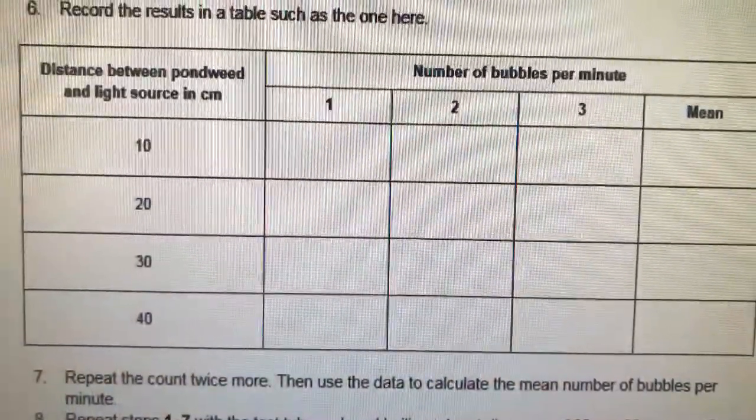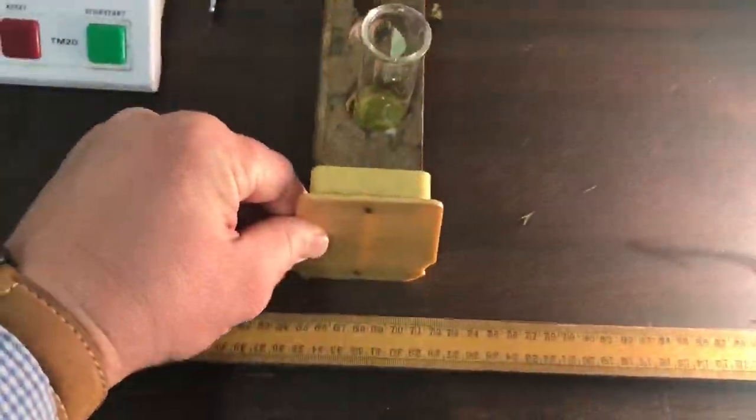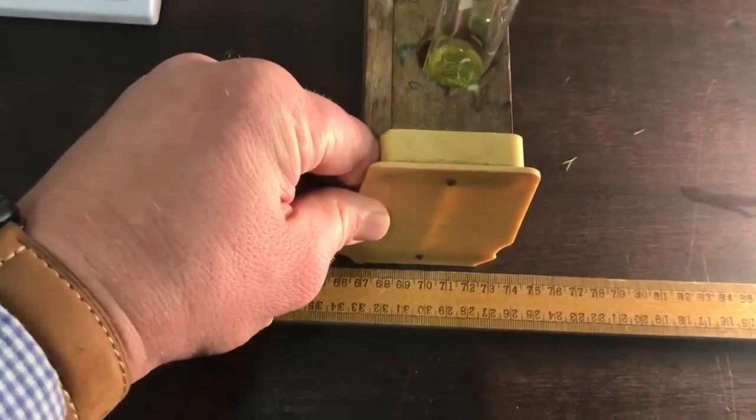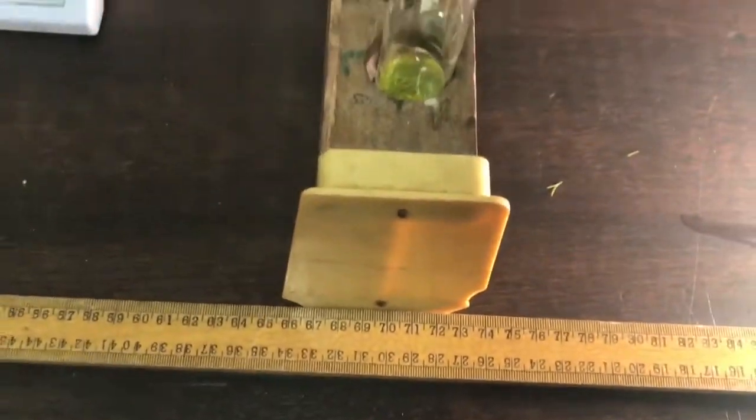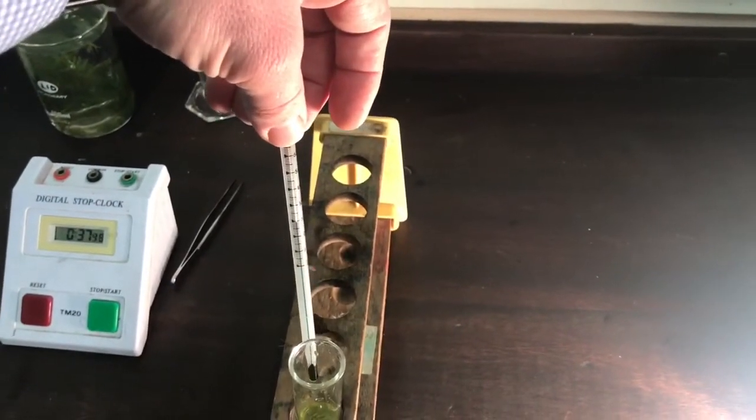As a results table, you can see the number of bubbles per minute three times over at 10 centimeters away. You can see that set of results slightly different to the ones that we've set. Go 10, 20, 30, 15, 17, 19, totally depends on you. And not forgetting to continue to measure the temperature for control.